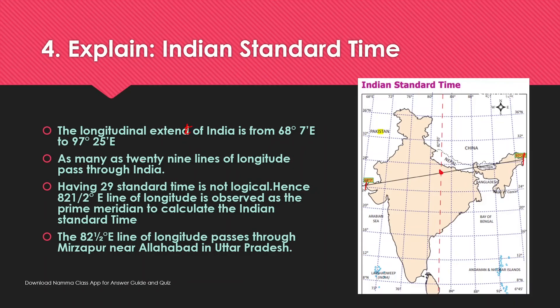As many as 29 lines of longitude pass through India. Having 29 standard times is not logical. Hence, 82.5 degrees east is chosen as the reference line of longitude to calculate Indian Standard Time.